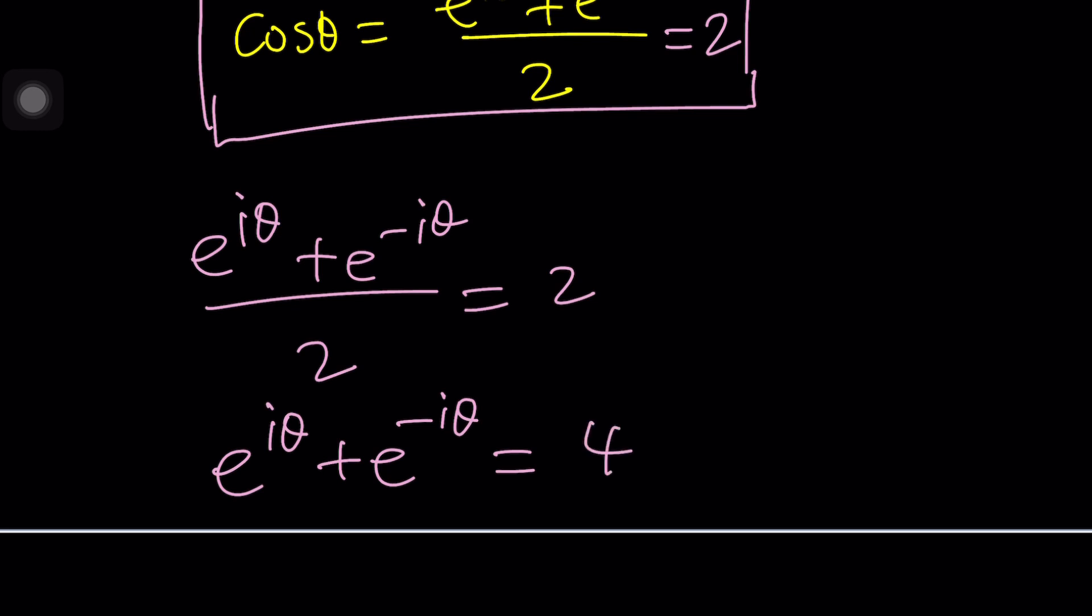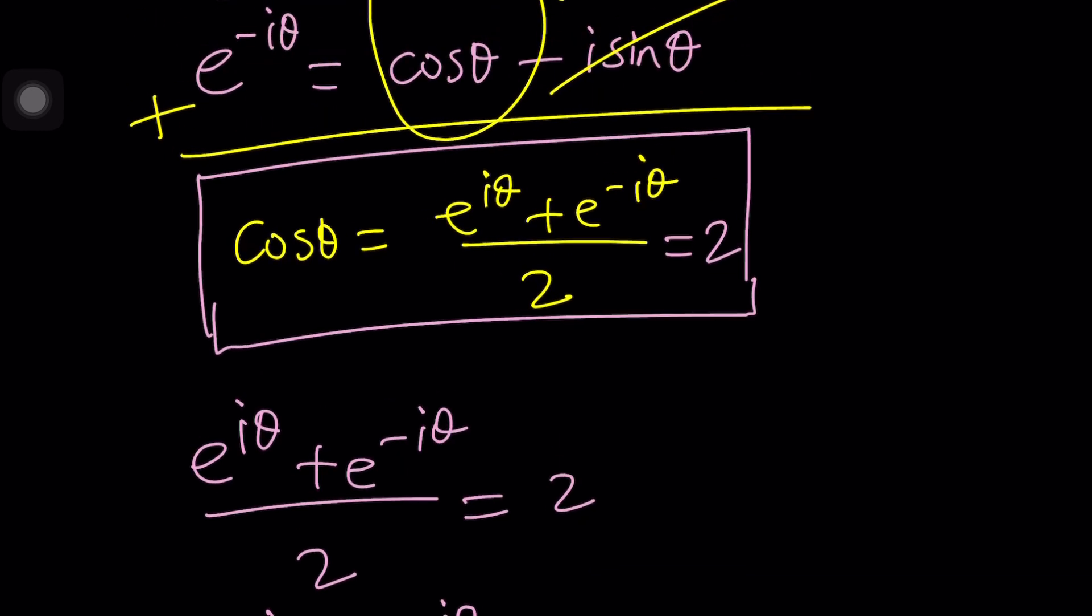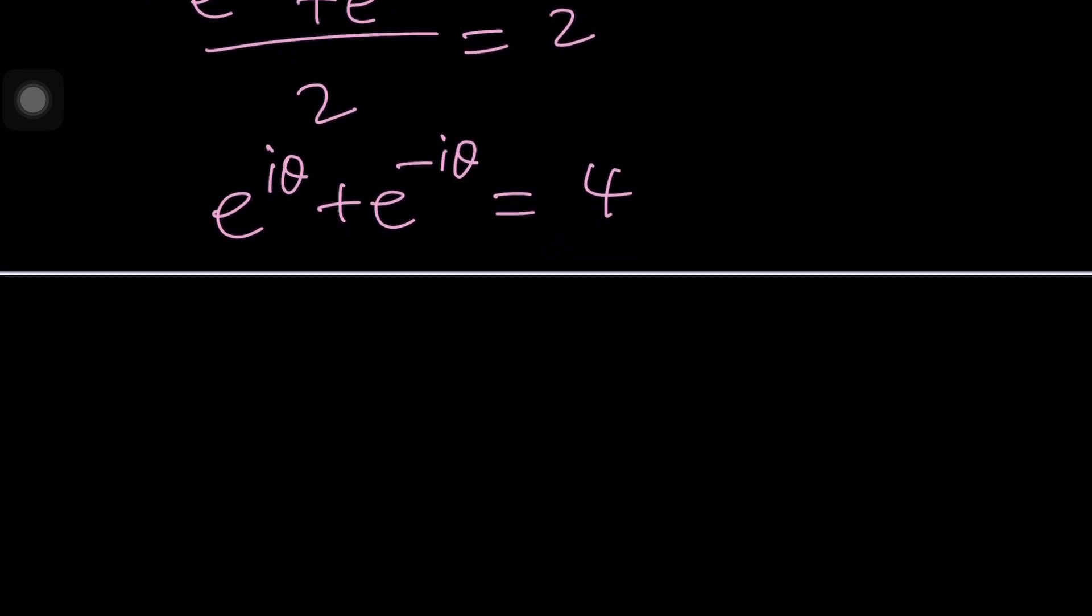And then, by the way, with the sine, there's an i at the bottom and minus sine. So they're very similar. If you memorize them together in tandem, it'll be easier. So now we have this equation. How do we solve it?